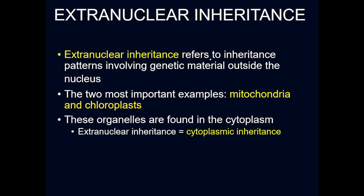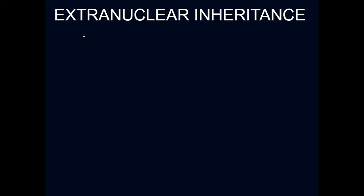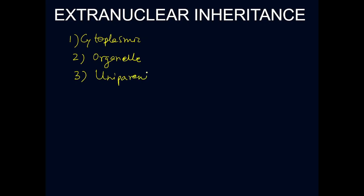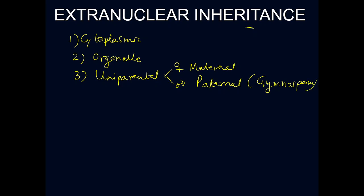Extra nuclear inheritance is also written in some books as cytoplasmic inheritance, organelle inheritance, or uni-parental inheritance. Uni-parental means contribution is coming from one parent. If it comes from the female side, it is called maternal inheritance. If it comes from the father's side, it is called paternal inheritance — this has been shown in some plants as an exception.